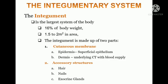The integument is made up of two major parts: one is the cutaneous membrane and another is accessory structures. The cutaneous membrane has three layers: epidermis, which is the superficial epithelium or outermost layer; dermis, which is the middle layer; and hypodermis, which is the innermost layer. The second part, accessory structures, also called derivatives of the skin, includes hairs, nails, and exocrine glands.